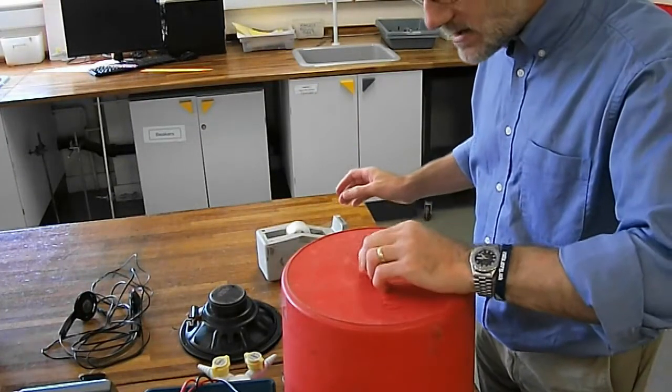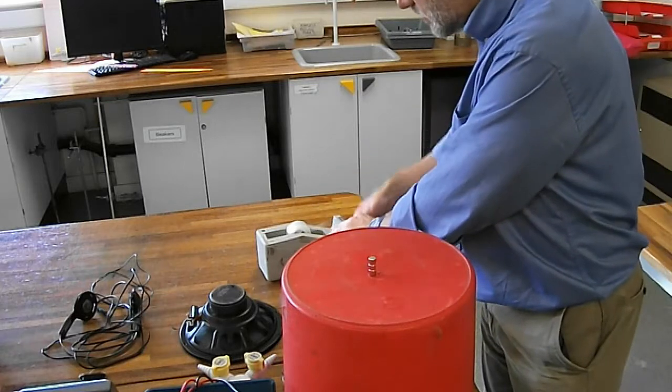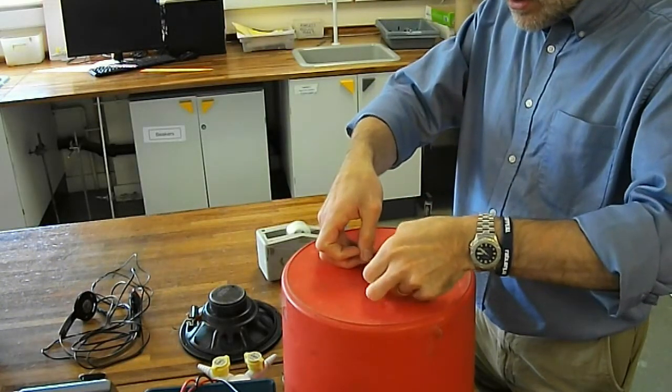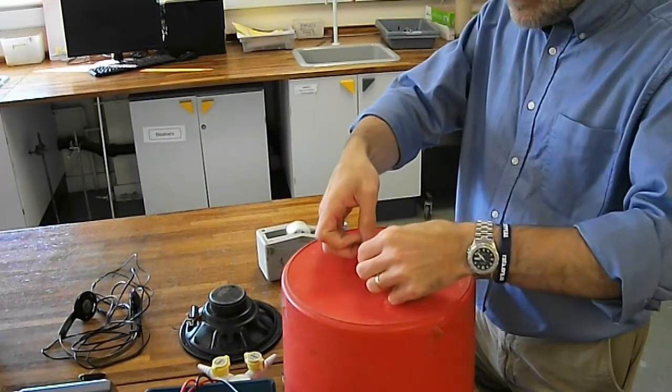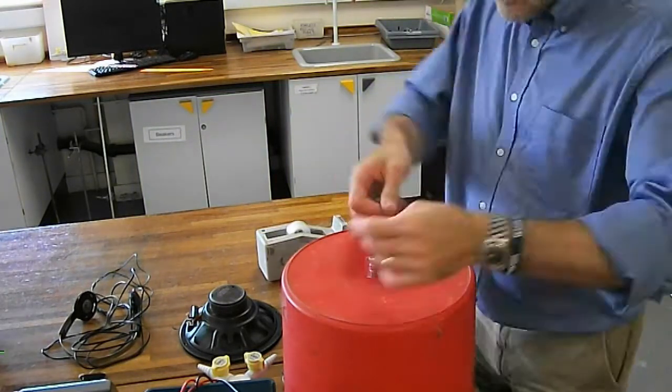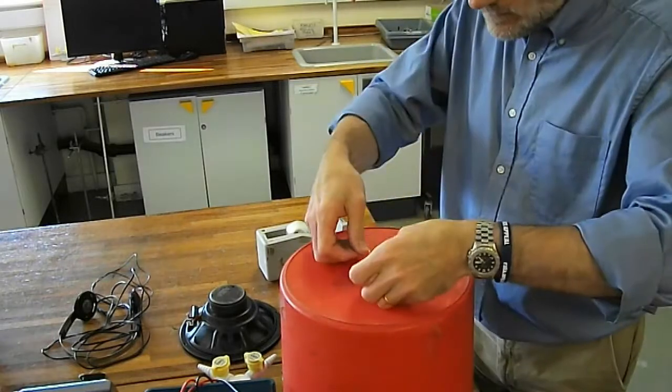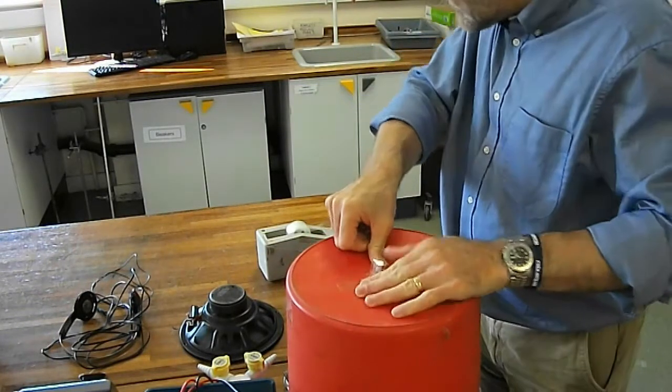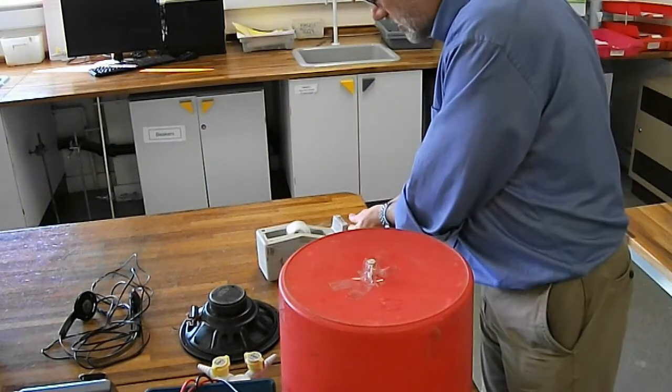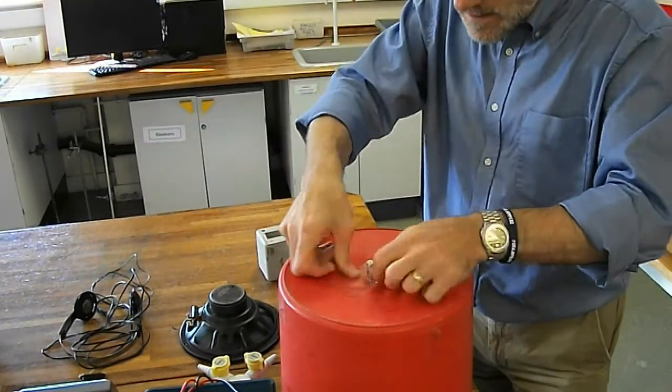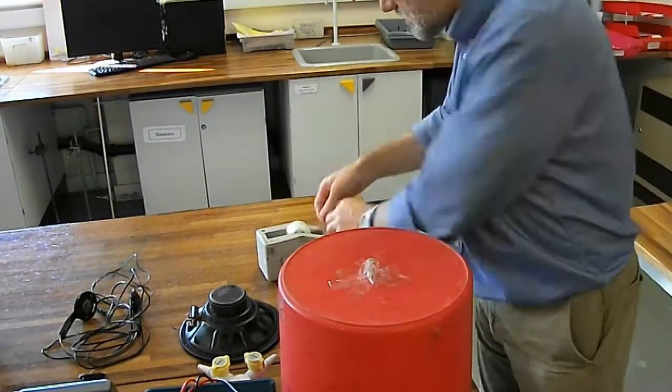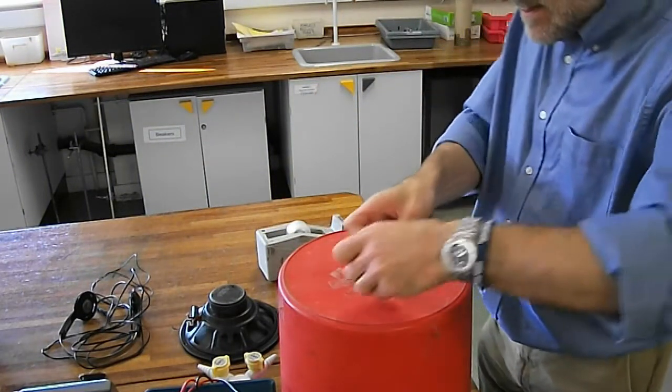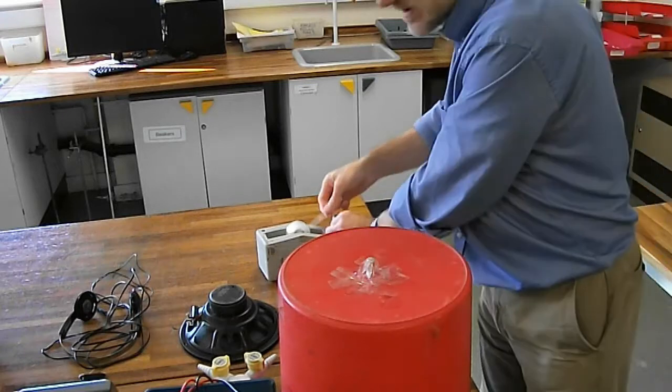First step, take the neodymium magnets and stick them onto the bin. Now I want these magnets to be firmly attached to the bottom of the bin. It doesn't matter what sort of tape you use, let's try and get that nice and thick.